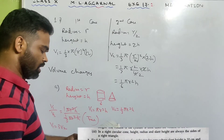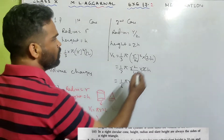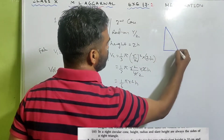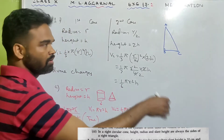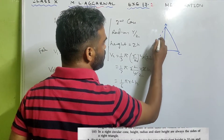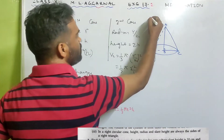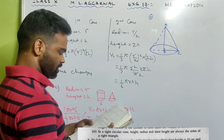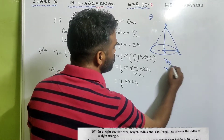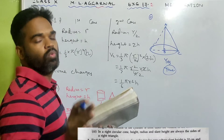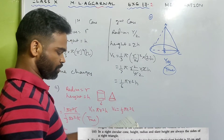Number 3: In a right circular cone, the height, radius and slant height are always the sides of a right angle triangle. Yes, that's true — because you take a right angle triangle and revolve it around one of its sides except the hypotenuse, and what you get is a cone. So for a right circular cone, height, radius and slant height do always form a right angle triangle. This is true.